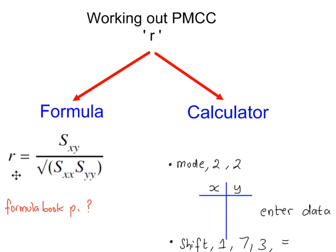The alternative is using the formula, and these three summarized values may be given to you in a question, and then you just enter those into this formula, and you will work out the same value of R that your calculator is giving you.